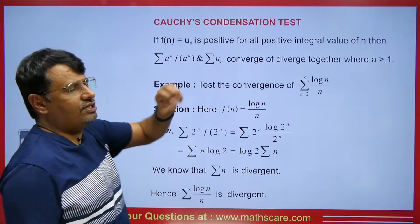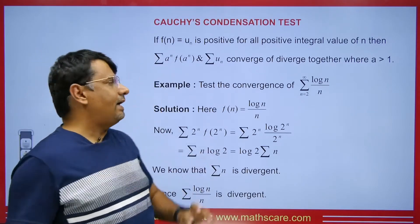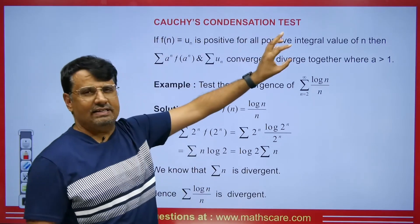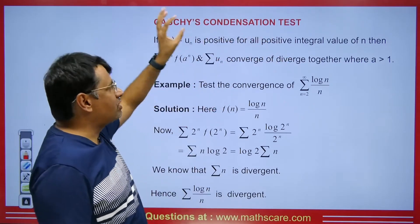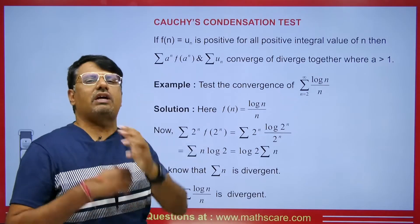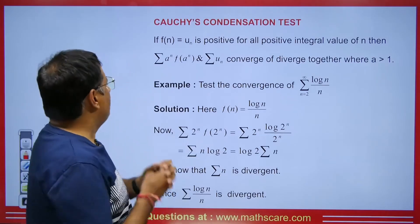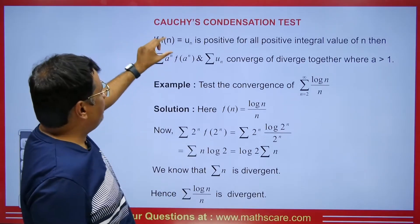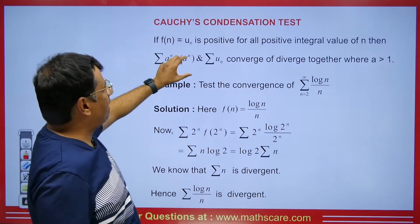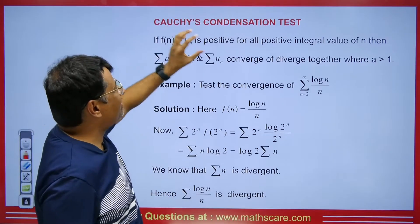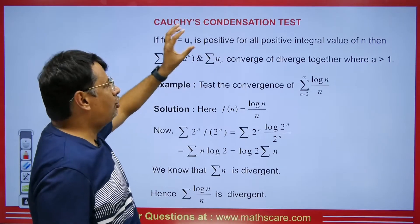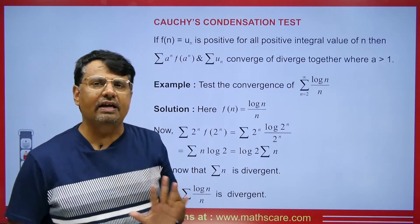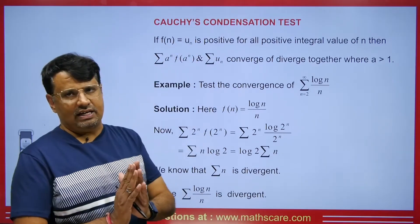So what does the Cauchy Condensation Test say? If we have any infinite series where we have positive integral values — meaning positive terms — then the summation of a raised to power n, f(a^n), and summation u_n, both of these will either converge or they will diverge.